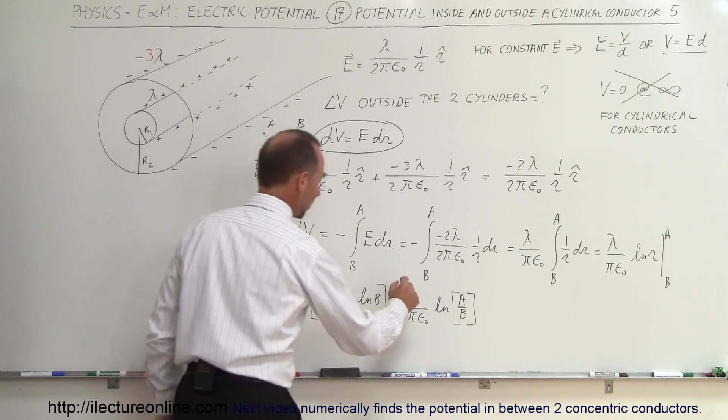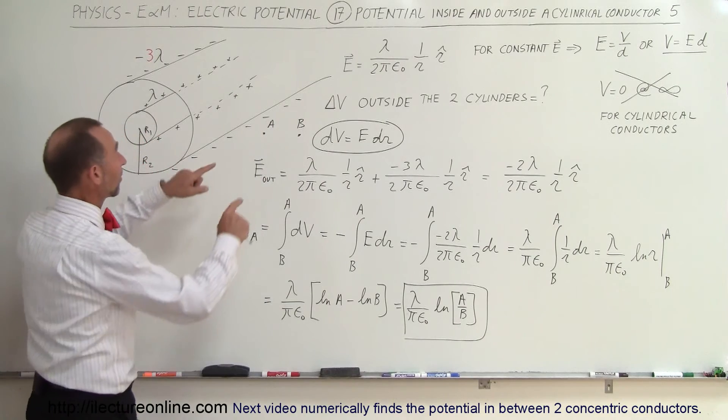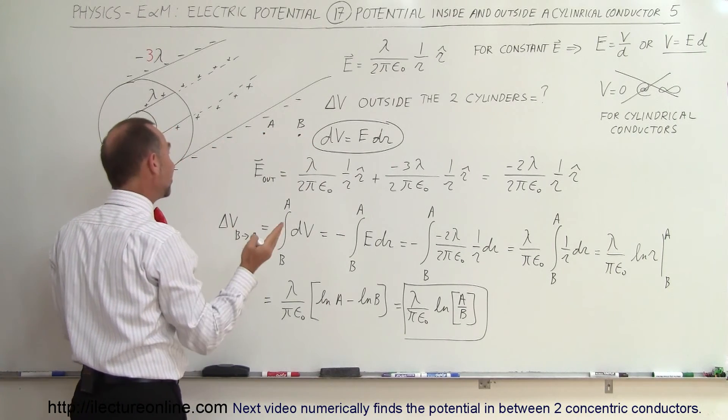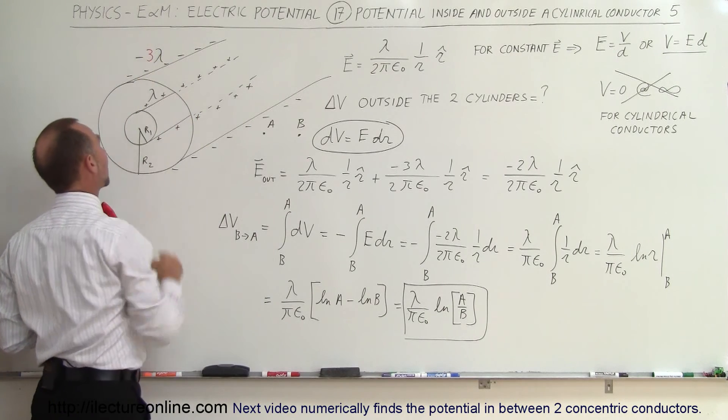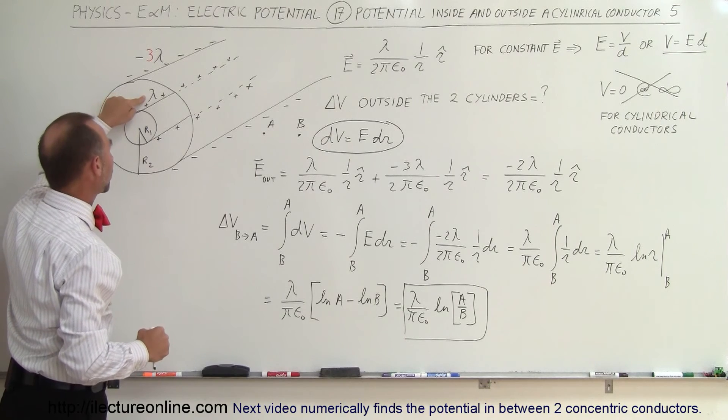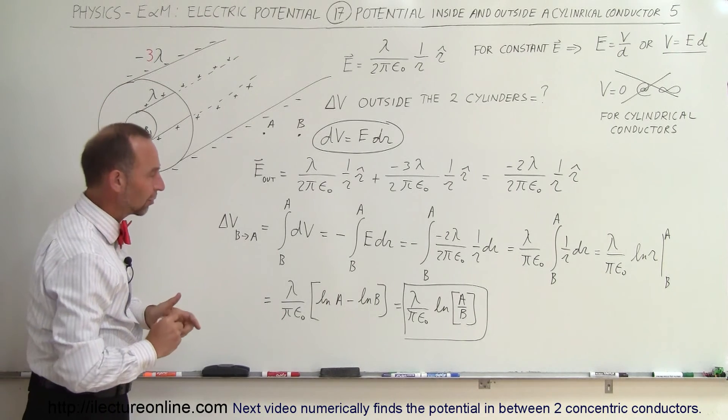All right. So this here would be the potential difference between any two points outside the second cylinder, B being farther away than A. In this case, where we have minus 3 times λ as the charge density of the outside cylinder and plus 1λ as the charge density inside the cylinder. That's where the constant comes from.